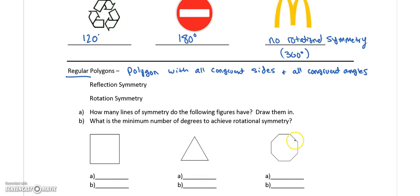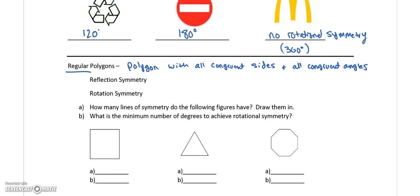So if we look at these three figures, square has four congruent sides, four congruent angles. This is an equilateral triangle. All sides are congruent. All these angles are congruent. This is a, let's see, one, two, three, eight sides. That would be an octagon. All sides are congruent and all these angles are the same size, are congruent. So these are all regular polygons.